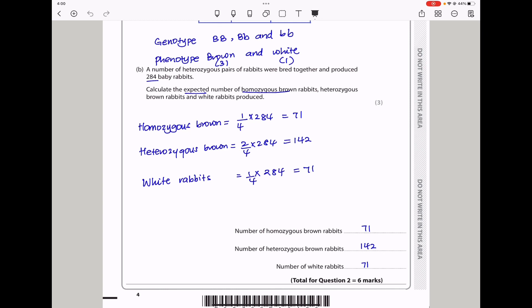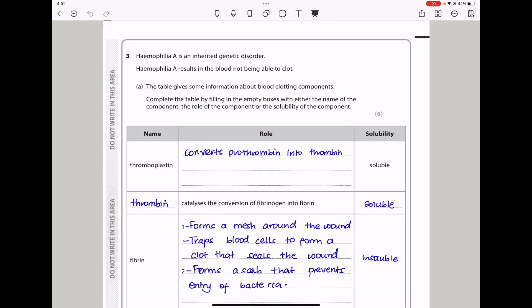Let's continue to question three. Question three says Haemophilia A is an inherited genetic disorder. Haemophilia A results in the blood not being able to clot. The table gives some information about blood clotting components. Complete the table by filling in the empty boxes. The first name is thromboplastin. We know thromboplastin is going to be able to convert prothrombin into thrombin, and that is soluble.